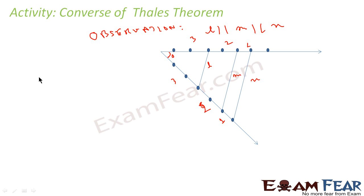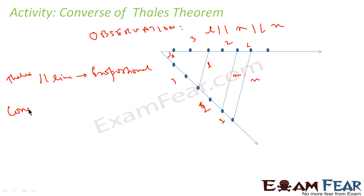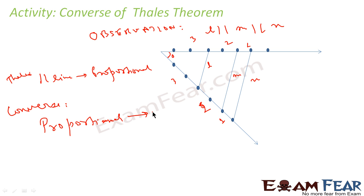Thales theorem says that parallel lines imply proportional segments. Converse means the other direction: in the converse, we take proportional points and then conclude that the lines are parallel. Here we got proportional points, joined them, and found the lines to be parallel.